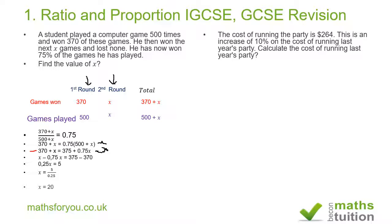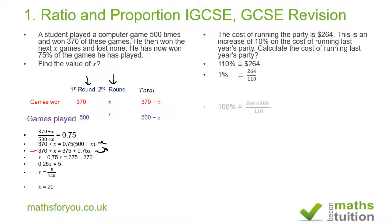Because this year's cost is 10% more than last year's, this year represents 110% of last year's cost. So 110% is equivalent to $264. To find 100% (last year's cost), we calculate 264 ÷ 110 × 100, which gives us $240.